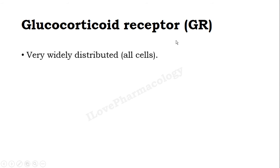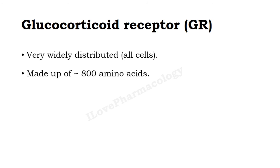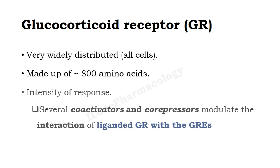The glucocorticoid receptor is widely distributed and present practically in all cells, and it is made up of 800 amino acids. The intensity of the response depends on the coactivators as well as the corepressors, and also on how these coactivators and corepressors modulate the integration of the ligand-gated glucocorticoid receptor with the glucocorticoid responsive elements.